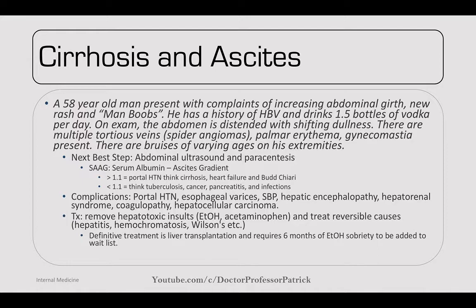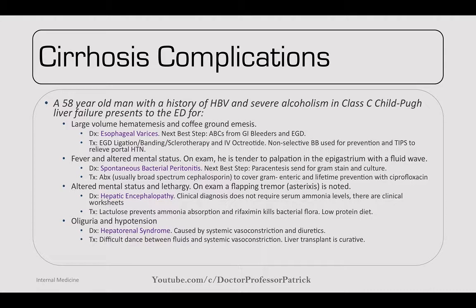Cirrhosis complications — esophageal varices: a 58-year-old with hep B, alcoholism, and Child-Pugh class C liver failure presents with large volume hematemesis and coffee ground emesis. Next best step: ABCs and EGD. Treatment: EGD ligation, banding, or sclerotherapy; IV octreotide to lower bleeding; non-selective beta blockers and octreotide for prevention; TIPS procedure to relieve portal hypertension.